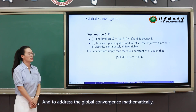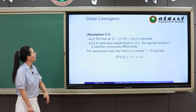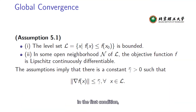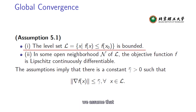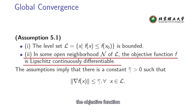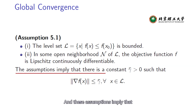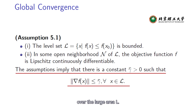To address global convergence mathematically, we make the following assumptions. First, we assume that the level set is bounded, which is a common assumption. Second, we assume that in some open neighborhood of this level set, the objective function is Lipschitz-continuously differentiable. These assumptions imply that there is a constant gamma-bar which can bound the norm of the gradient over the large area L.